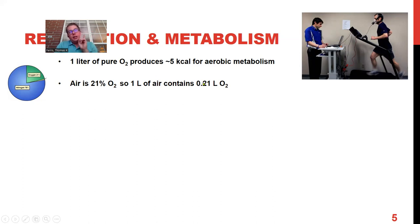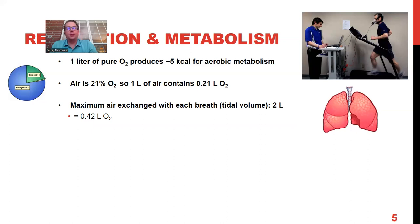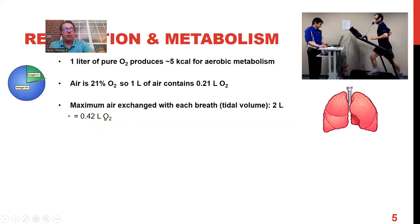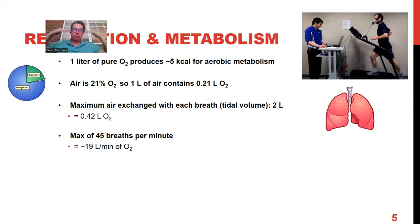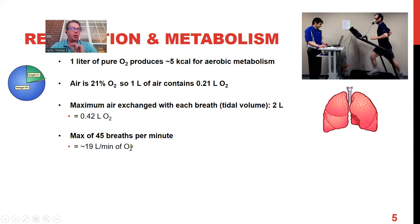At sea level, one liter of air contains 0.21 liters of pure oxygen. If we take our deepest breath — about two liters of air exchanged for adults — two liters times 0.21 gives us 0.42 liters of pure oxygen per breath. At 45 breaths per minute (peak breathing rate), that's about 19 liters per minute of pure oxygen available to the lungs.